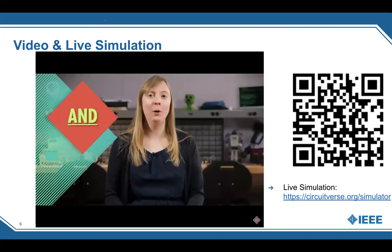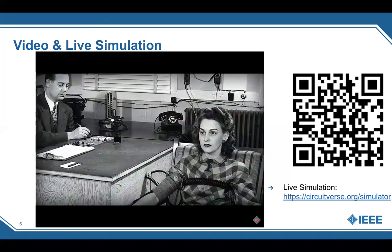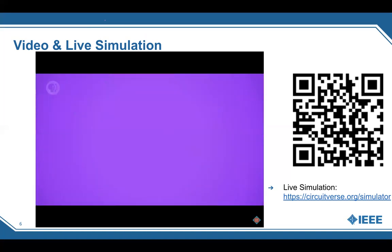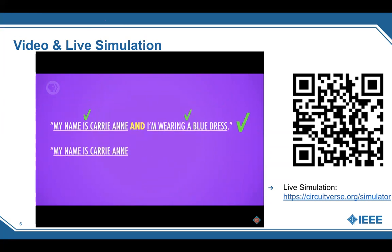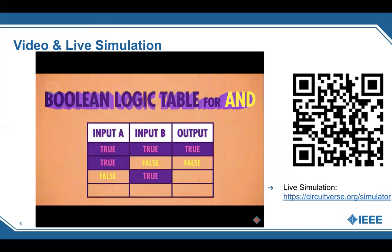The AND Boolean operation takes two inputs and produces a single output — true only if both inputs are true. Think of telling the truth: you're only completely honest if you don't lie even a little. To build an AND gate, we need two transistors connected in series so we have two inputs and one output. If only transistor A is on, current won't flow because it's stopped by transistor B. Only if transistor A AND transistor B are both on does the output wire have current.